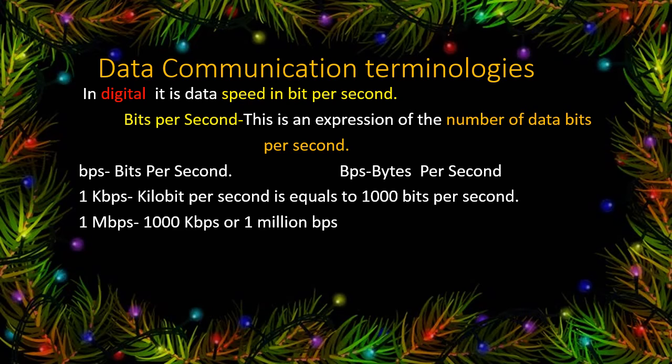One megabit per second equals one thousand kilobits per second, or one million bits per second. One terabit per second is equal to one thousand gigabits per second, or one million megabits per second, or one billion kilobits per second, or one trillion bits per second.